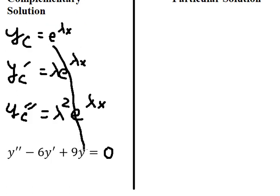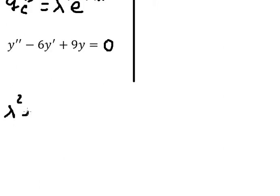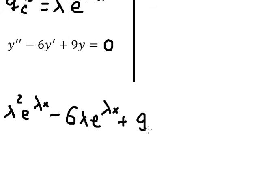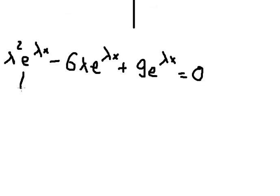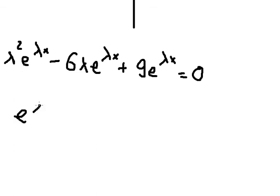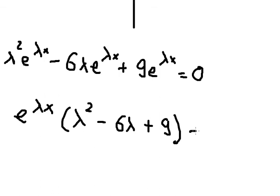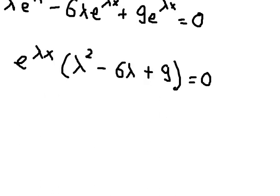Because this is the complementary solution, this equals zero. So we substitute in: λ²·e^(λx) minus 6λ·e^(λx) plus 9·e^(λx) equals zero. We can factor out e^(λx), giving e^(λx) multiplied by (λ² − 6λ + 9) equals zero.